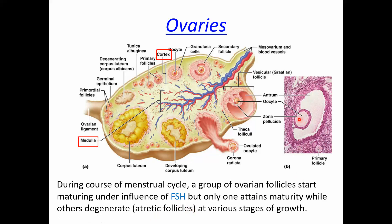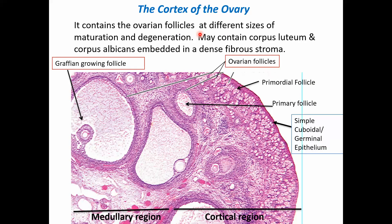This is a histological picture of a Graafian follicle. The cortex of the ovary contains ovarian follicles at different sizes of maturation and degeneration. It may also contain the corpus luteum and corpus albicans, embedded in a dense fibrous stroma. The outer layer is the simple cuboidal or germinal epithelium, followed by primordial follicles, primary follicles, secondary follicles, and the Graafian follicle. The cortex contains all the ovarian follicles, whereas the medulla contains blood vessels and lymphatics.